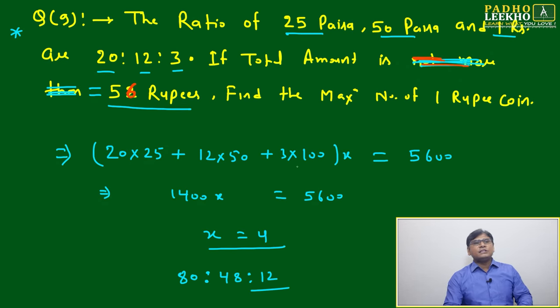We have taken a common factor x. Then 20 into 25 paise, 20 into 25, we multiply to make the total. Again, 12 into 50 and 3 into 100.